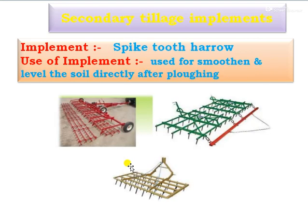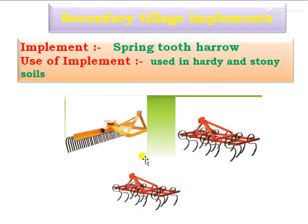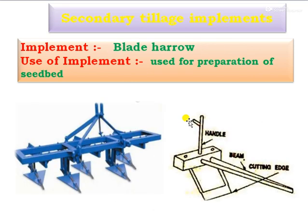The spiked tooth harrow is used for smoothening and leveling of the soil directly after the ploughing operation. The spring tooth harrow is used only in hard and stony soils. The blade harrow is mainly used for the preparation of the seed bed; this is a tractor-operated as well as a bullock-drawn seed blade harrow.